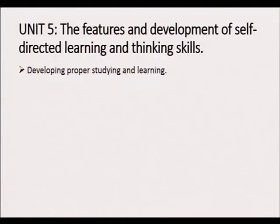Now we go on to the last question, which is Question 5 coming under Unit 5. Unit 5 is about the features of development of self-directed learning and thinking styles. In this unit you are required to explain how developing proper studying and learning styles is possible for learners — how learners can develop proper studying and learning habits. Use the 13 study habits in your explanation, as they are explained thoroughly in your study guide.